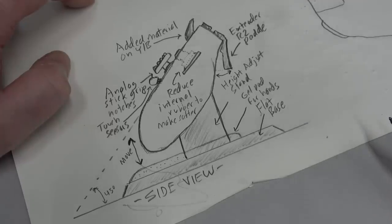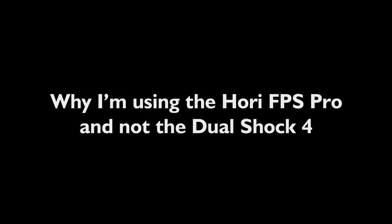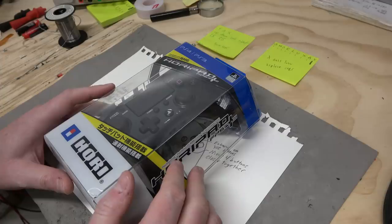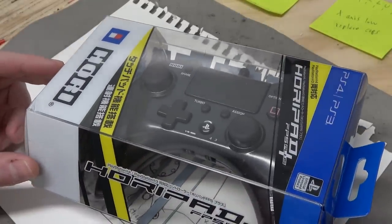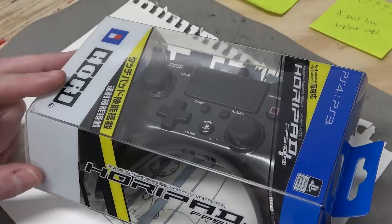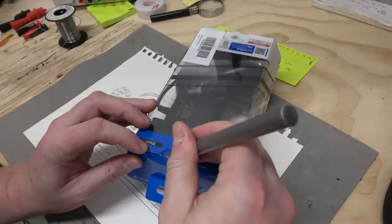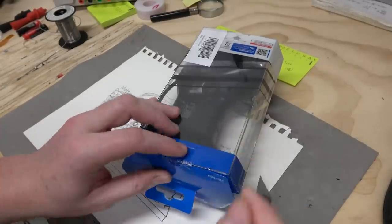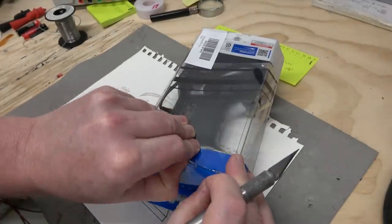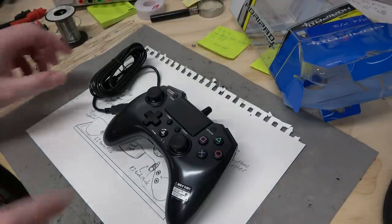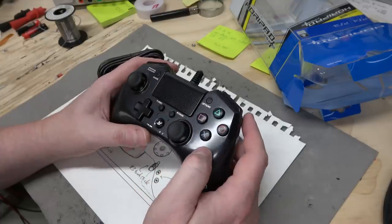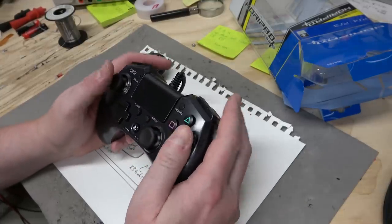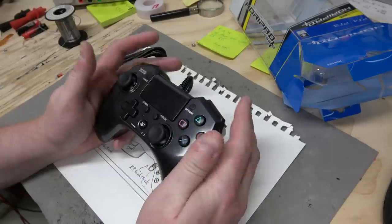We're going to start by taking apart the controller. This is the Horipad FPS Plus. It's one of the very few third-party controllers for the PlayStation 4. You can usually get these off Amazon. But the problem is standard PlayStation controllers use silkscreen for the circuits, which is very hard to mod. Whereas these don't.